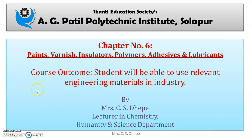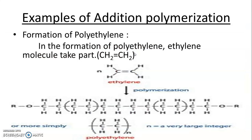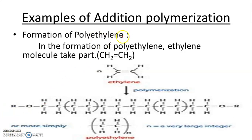In this video we are going to start the examples of polymers — their synthesis, properties, and applications. First we are going to see the formation of polyethylene, which we have already discussed during the example of addition polymerization. The monomer used in polyethylene is ethylene.